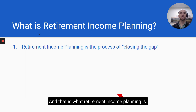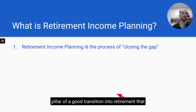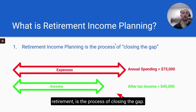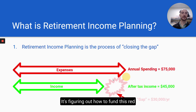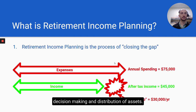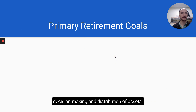That is what retirement income planning is. Retirement income planning — which I believe is the pillar of a good transition into retirement and should be done several years in advance — is the process of closing the gap. It's figuring out how to fund this red bubble, this $30,000 gap, through the best decision-making and distribution of assets.